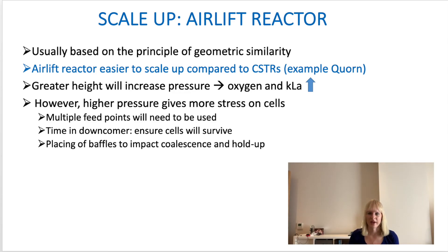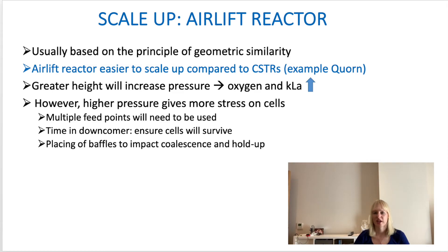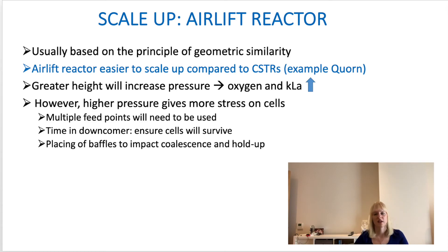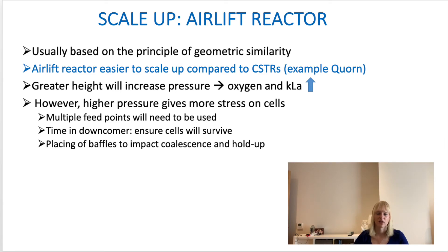These examples all apply to stirred tank reactors. When we looked at the airlift reactor, one of its main advantages was that it was relatively easier to scale up — as seen in the example of Quorn, where these reactors are around 60 meters tall. For scaling up an airlift reactor using geometric scaling, if you increase the height you automatically increase the pressure, which means oxygen increases and KLA goes up. However, the downcomer remains a critical design parameter — the longer the airlift reactor, the longer the cells will be without oxygen, and they might not survive the journey.